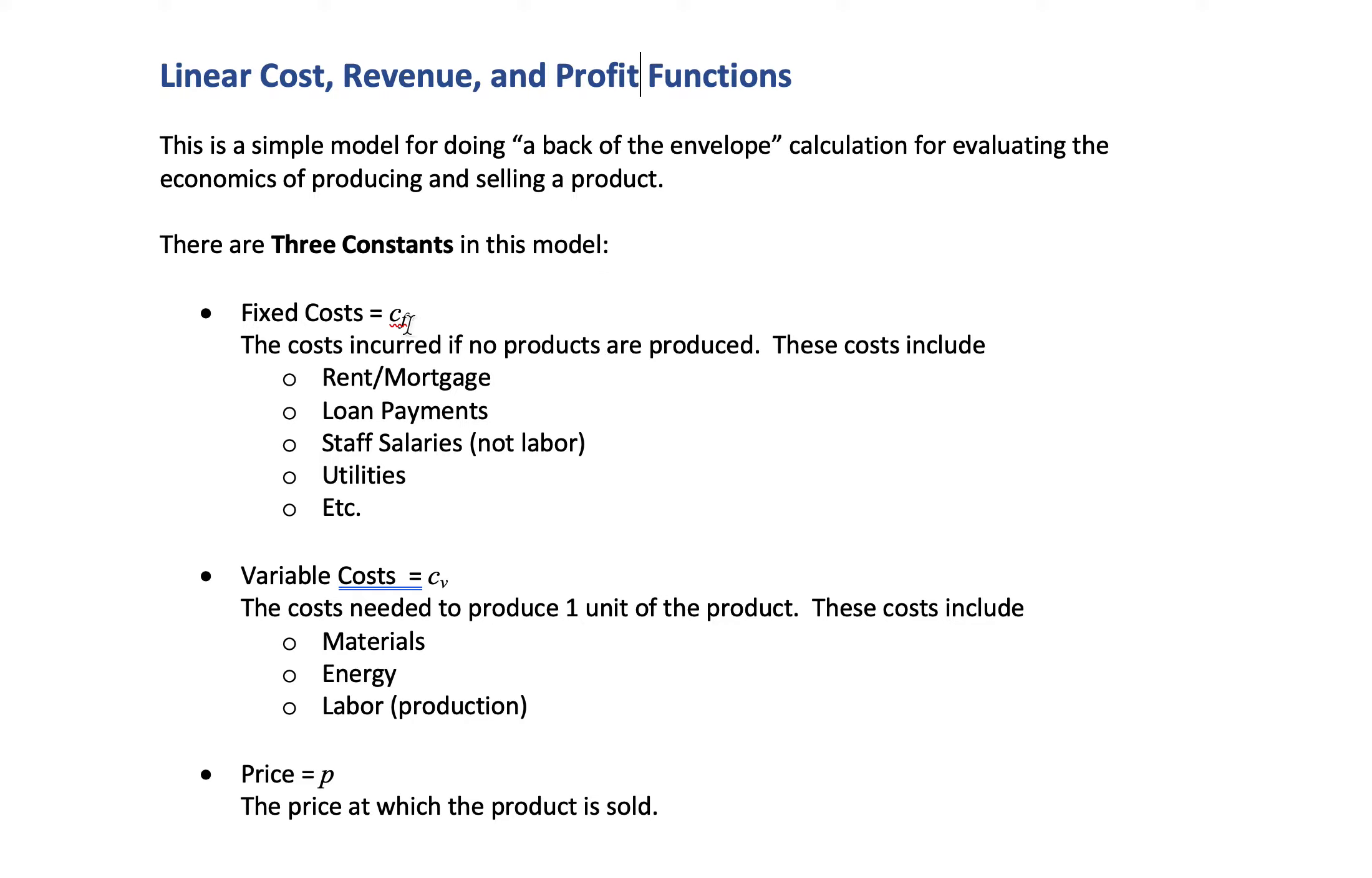Fixed costs, C sub f, are the costs incurred if no products are produced. For example, if North Park is closed for an entire month, they still have to pay bills - mortgages on buildings, loans on equipment, security, salaries of professors and staff. These costs include rent, mortgage, loan payments, staff salaries (not labor), and utilities.